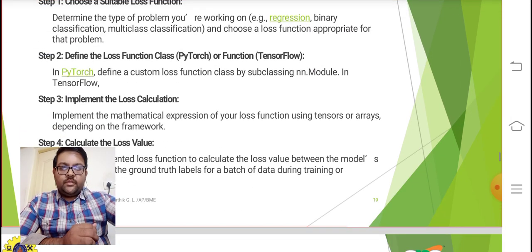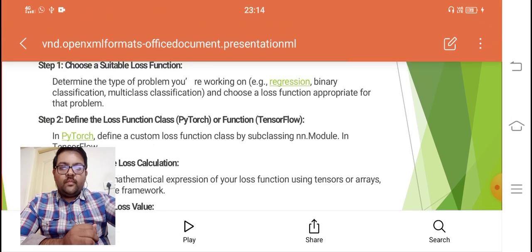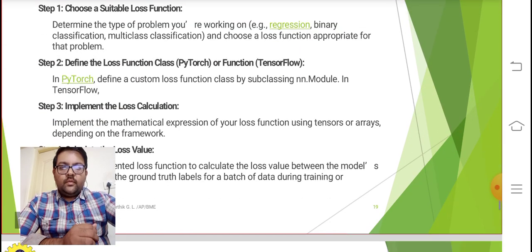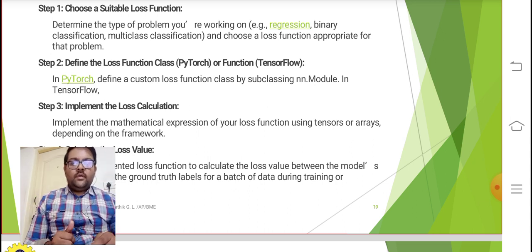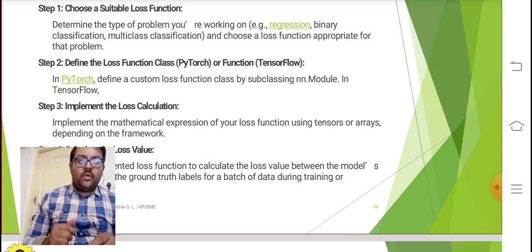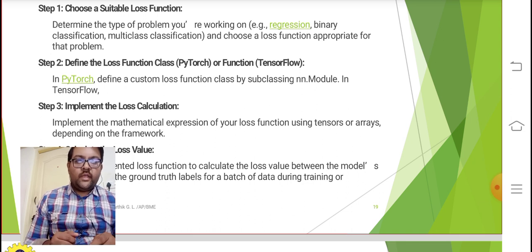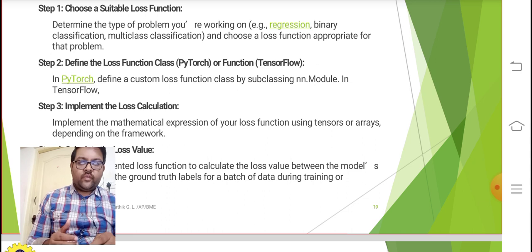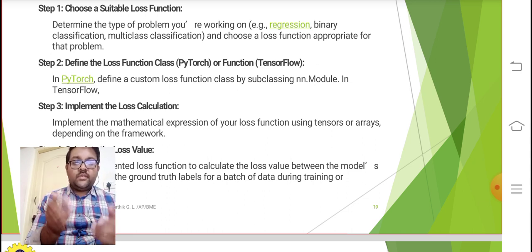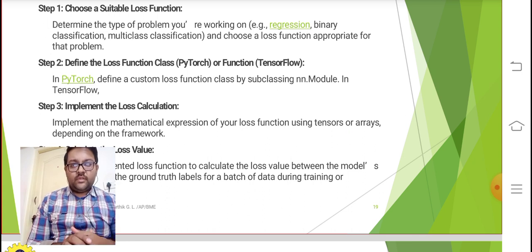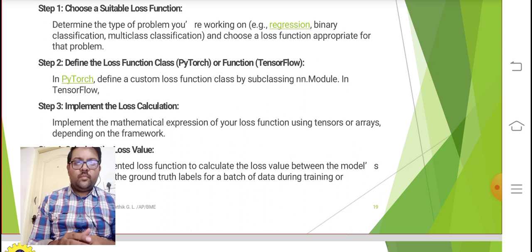What are the different steps? Step 1: Choose a suitable loss function. Determine the type of problem you are working on, for example is it a regression, binary classification, or multi-class classification. Choose a loss function appropriate for that problem because we discussed about so many loss functions. Loss function has to be chosen based on the problem.